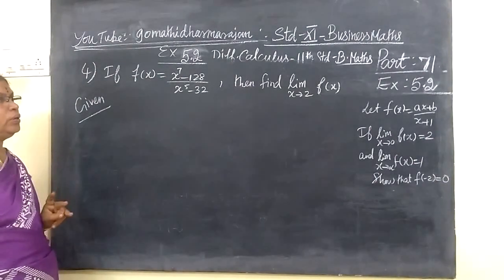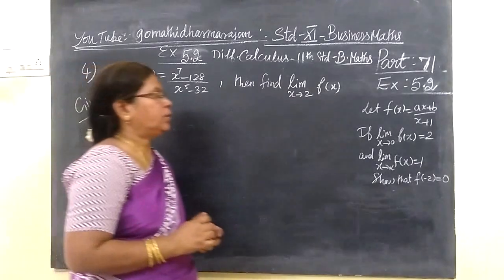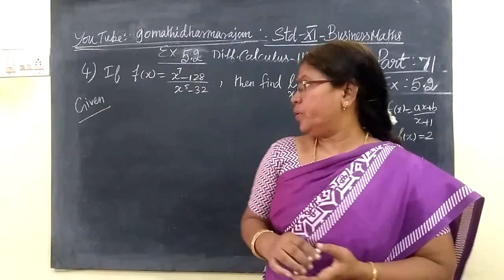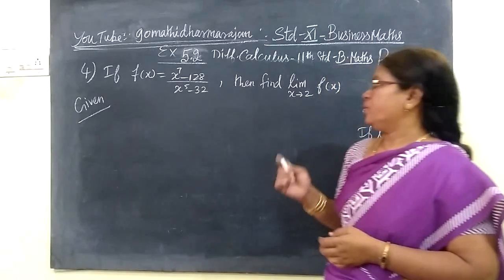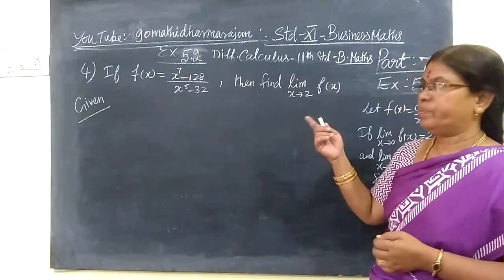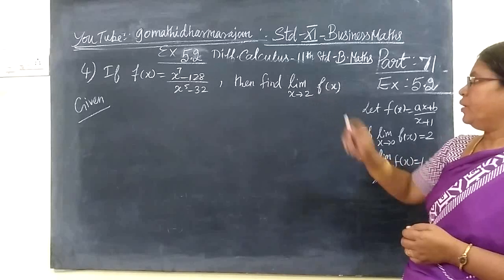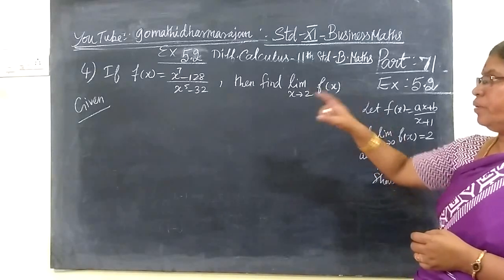So question number 4, in exercise 5.2 that we are seeing. F of x equal to x power n minus 128 by x minus 2. We are to find the value of limit. F of x, put this.